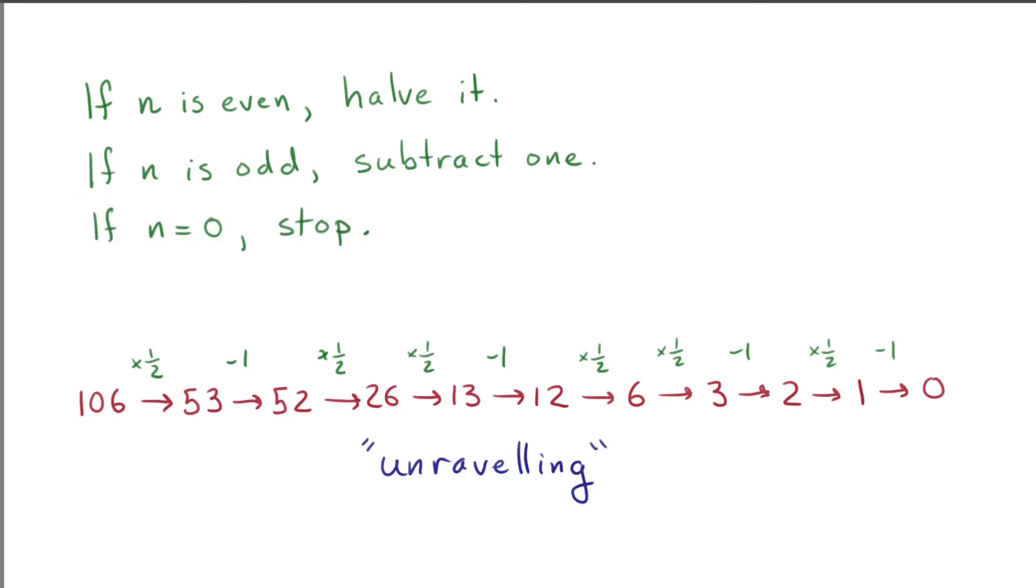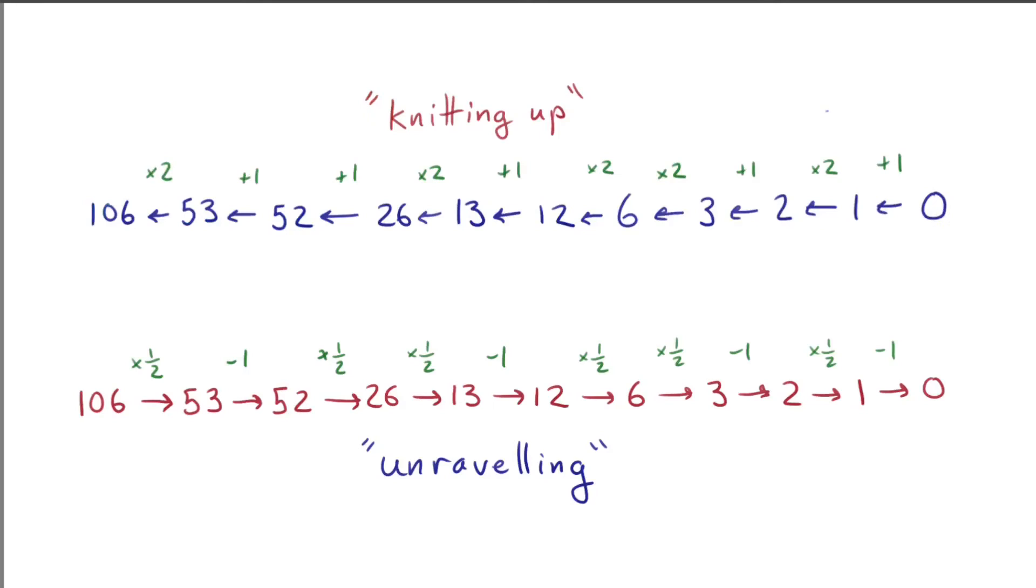To knit it back up, I can just do it all backward. The knitting up instructions actually give a solution to the whole puzzle that I asked at the beginning about how to build 106 with few operations.